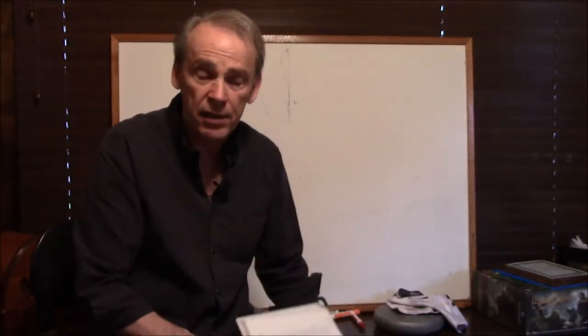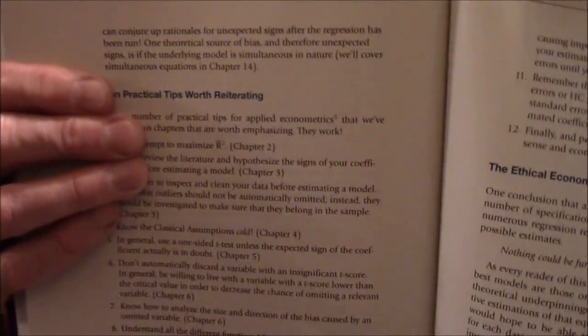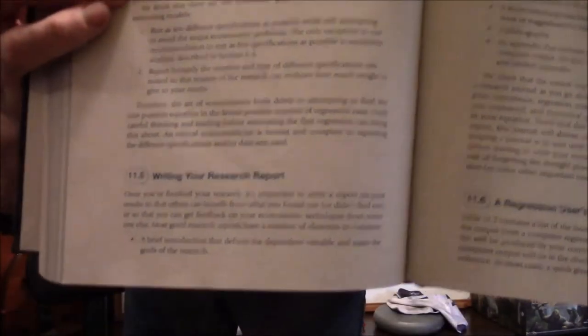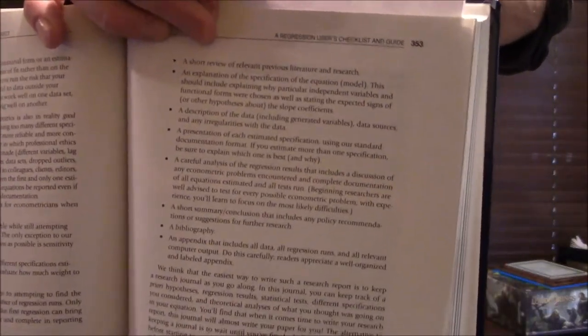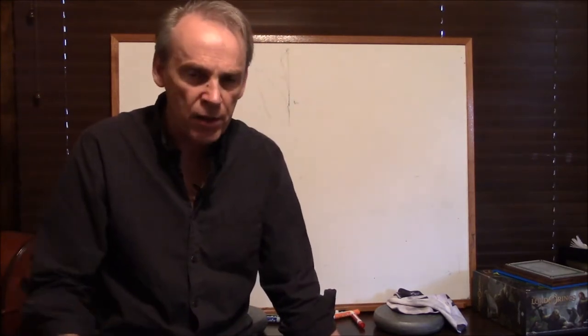He has a section on the ethical econometrician — don't run 10,000 regressions and then just display the one that actually worked. There's also a section called 'Writing Your Research Report' where he lays out an outline: your first part ought to be this, your second part ought to be this, and so forth — what a paper using econometrics should look like. And then he has a summary of the entire book on pages 354 to 356.